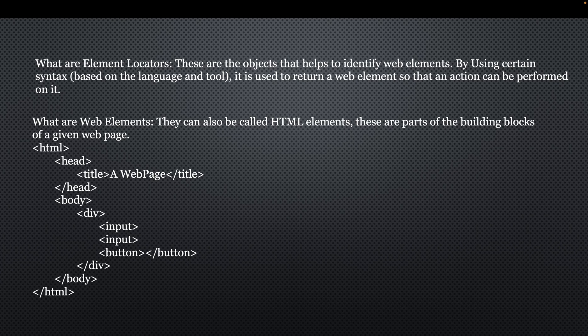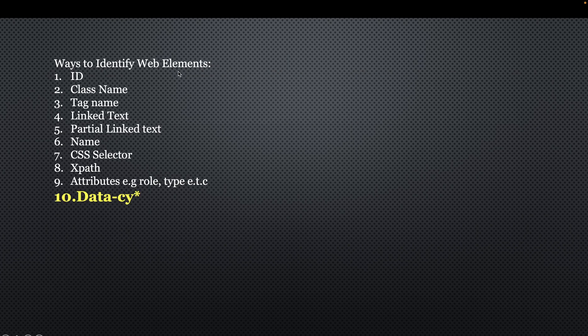A normal web page consists of HTML tags, and all these tags inside can be identified using web element locators. The web element locators include: ID, class name, tag name, link text, partial link text, name, CSS selector, XPath attributes, and data-cy. These cut across different tools, not just Cypress. It's important to mention all of them, especially in case you're in an interview session and are asked about web element identifiers.